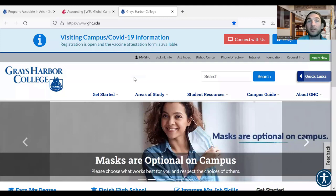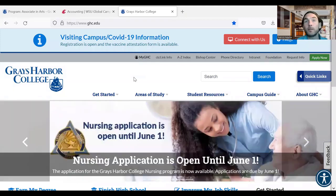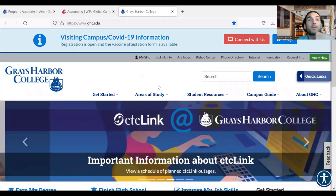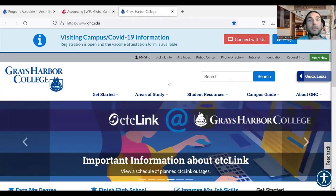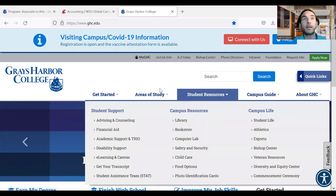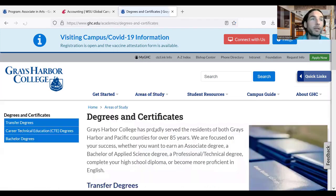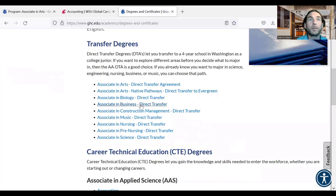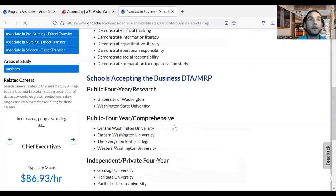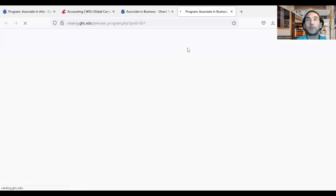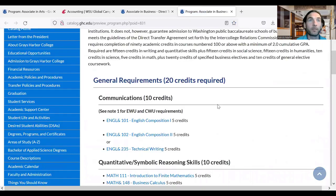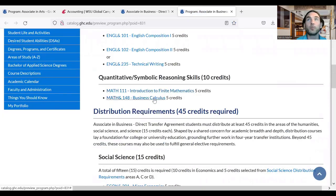Speaking of a bachelor's degree in business, our Associate in Business Direct Transfer degree ABDT will set you up for a smooth transfer to many business-related bachelor programs. Let me show you: Area of Study, Degrees and Certificates, Associate in Business Direct Transfer, and then take a look at the prerequisites and course list here: Math 111, Math 148.